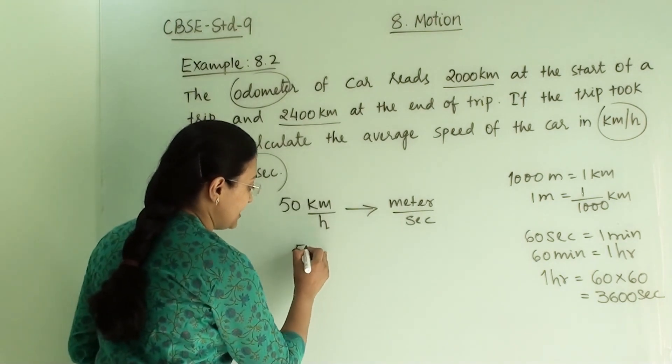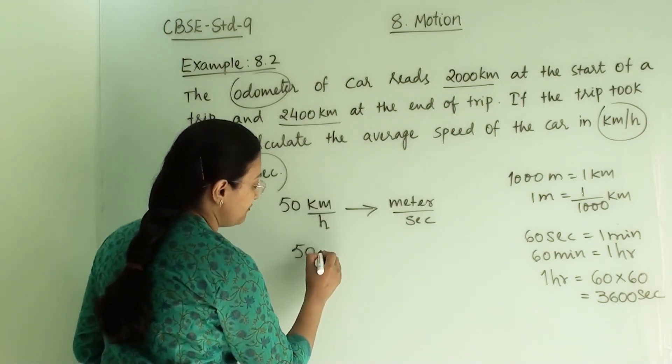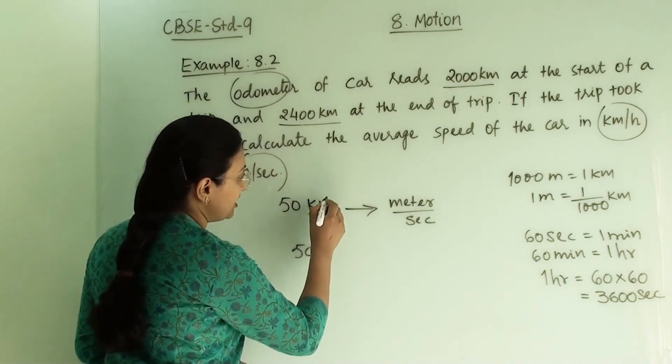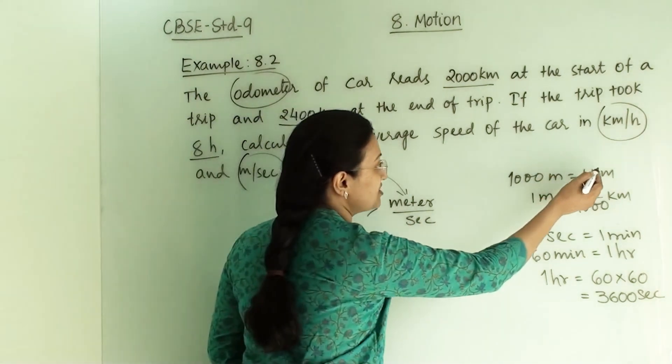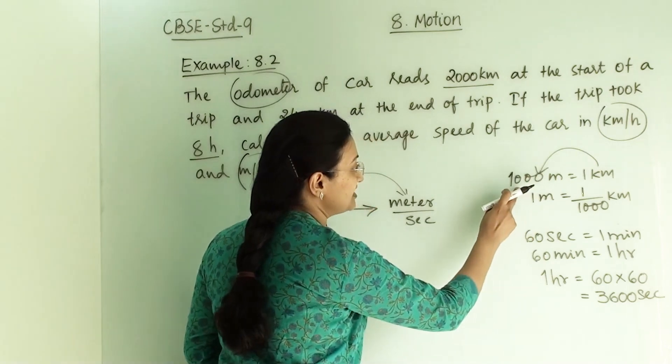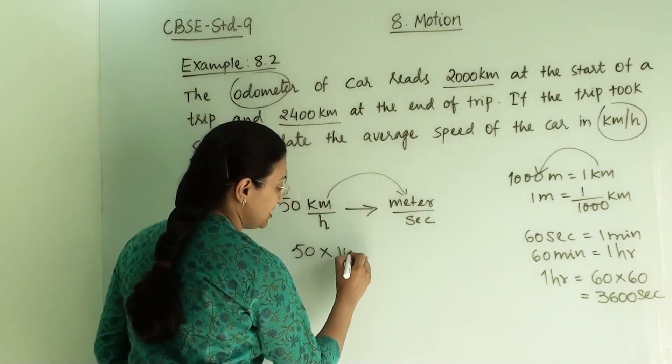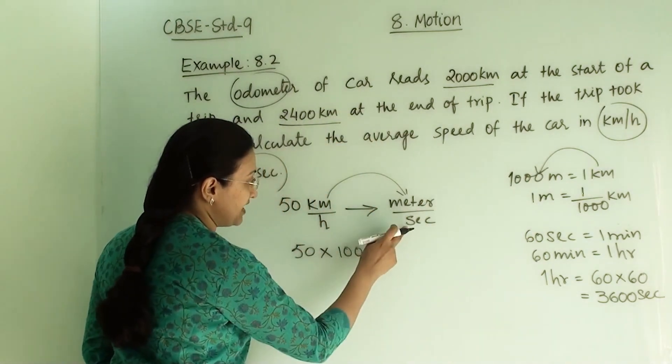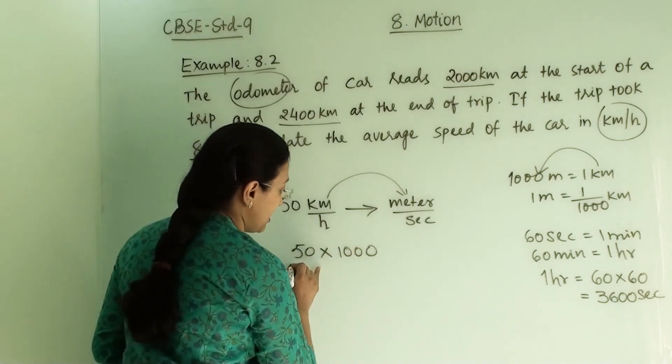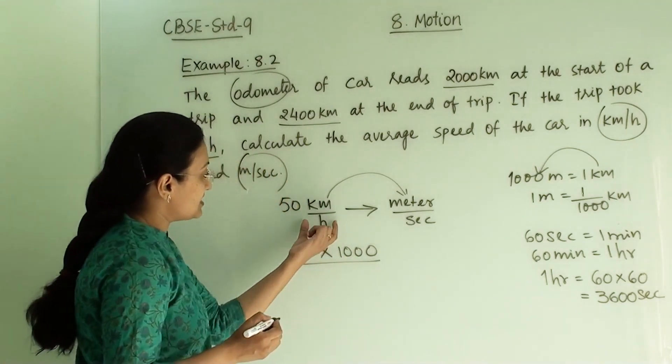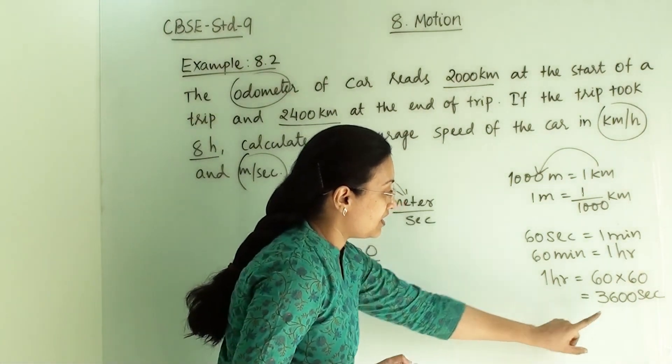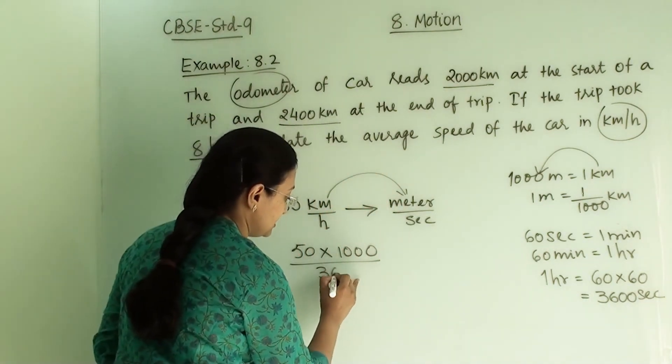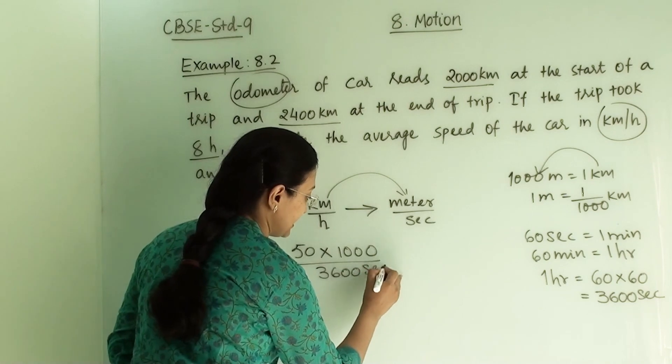Now 50 km per hour when we are converting it into meter per second, we have to multiply 50 into the kilometer to meter conversion factor. Kilometer to meter means we multiply with 1000. Then in division it is hour to second, which is 3600 seconds.